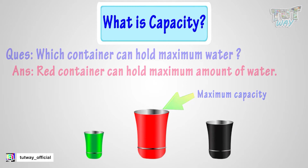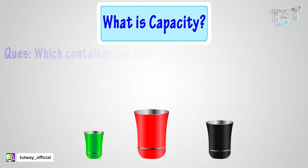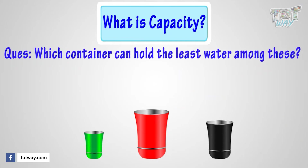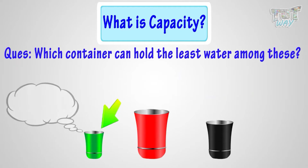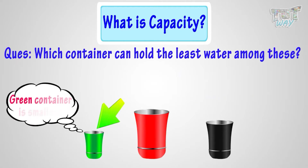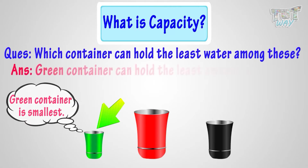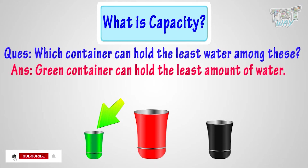Now, which container can hold the least water among these? The green container is smallest, so it can hold the least amount of water. So, the green container has the least capacity among all the containers.